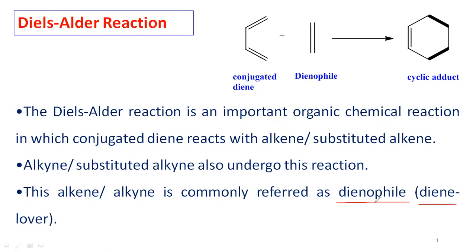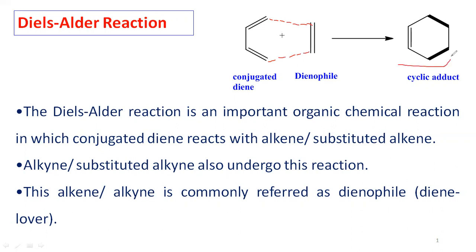In this reaction, one end of the conjugated diene forms a bond with a dienophile carbon, and the other end of the conjugated diene forms a bond with another carbon atom of the dienophile, giving the cyclic addition product. During that process, some bonds are broken and some new bonds are formed.